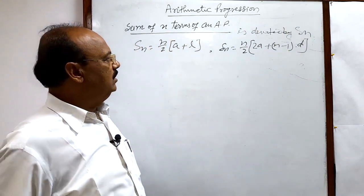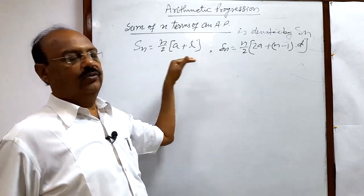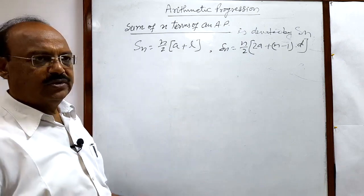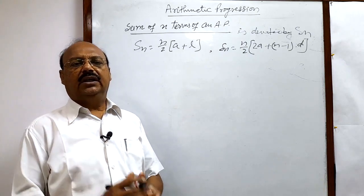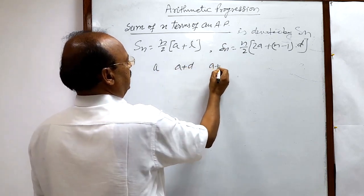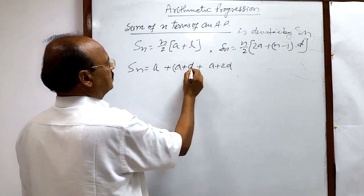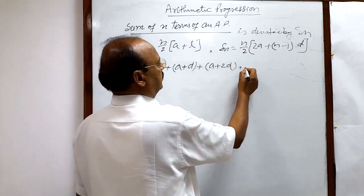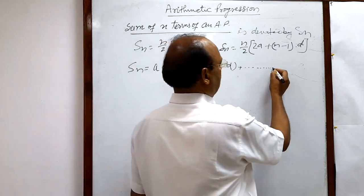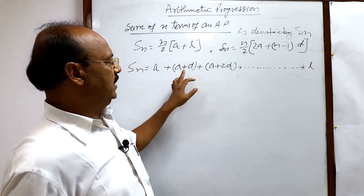You have to remember and memorize these formulas, but it will be easier to memorize them if we understand how we are getting this result — how we are getting the formula to find sum of n terms Sn. So let us suppose that the given AP is a, a plus d, a plus 2d, and so on. If we find the sum, we add all these numbers: a, a plus d, a plus 2d, up to the last term l.